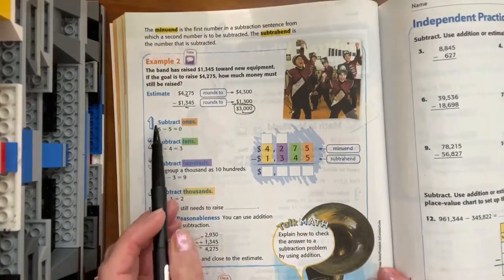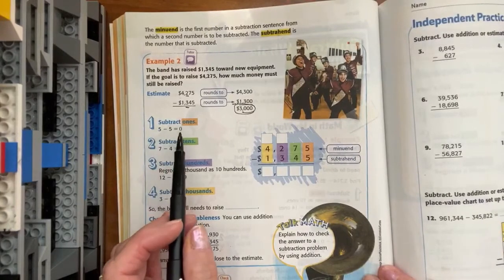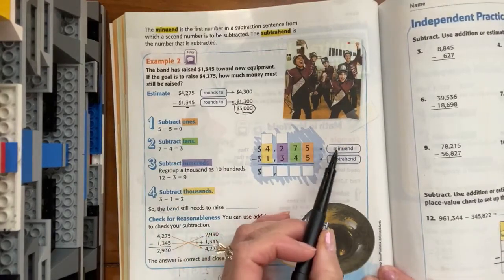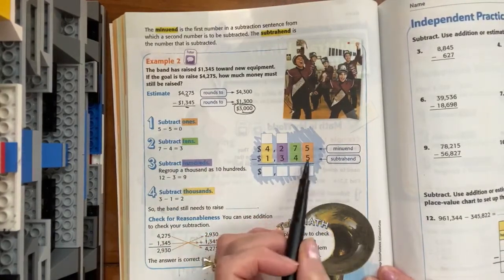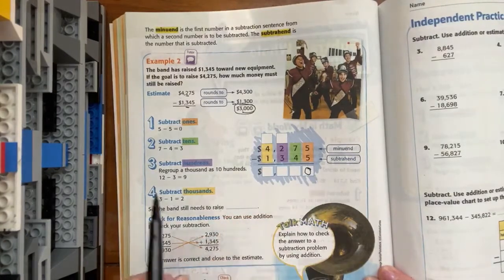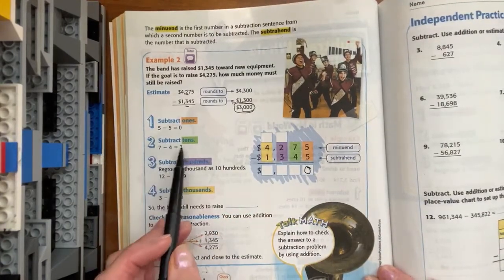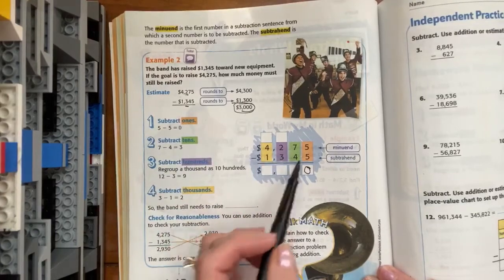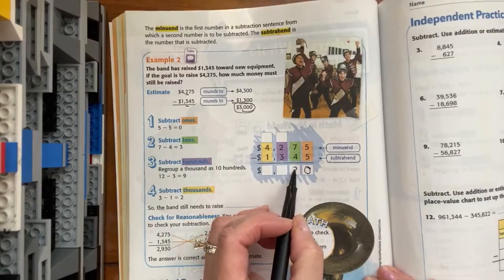So let's start with step one. They told us to subtract the ones. So we have the minuend. We're going to take out the subtrahend. That left us with zero. Now we're going to subtract the tens. We have seven tens. We're going to take out four tens. That leaves us with three tens.